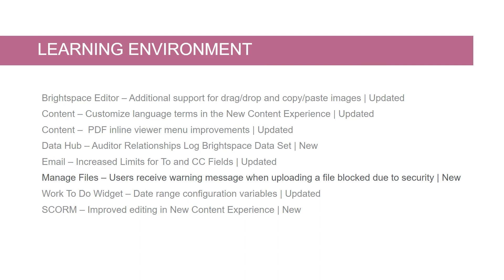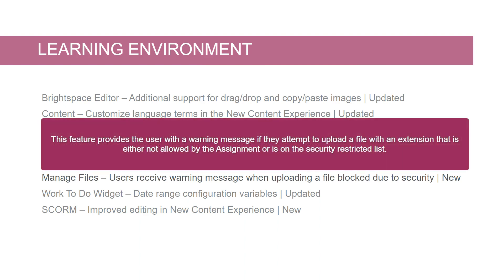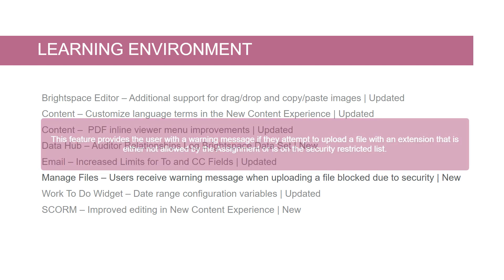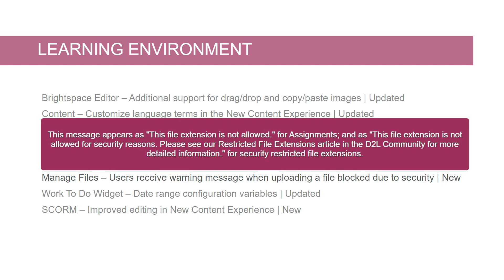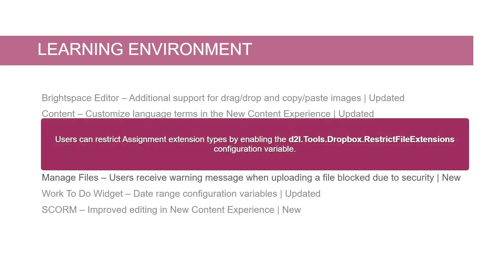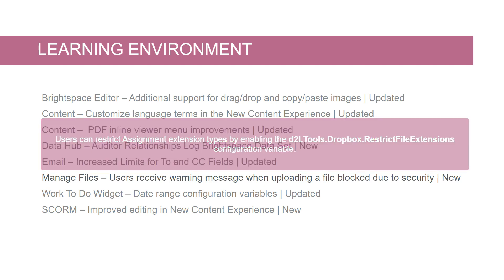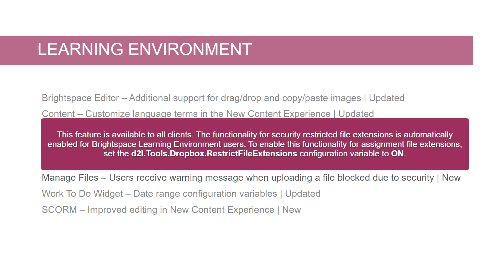Manage Files: Users receive a warning message when uploading a file blocked due to security. This feature provides the user with a warning message if they attempt to upload a file with an extension that is either not allowed by the assignment or is on the security restricted list. This message appears as 'This file extension is not allowed for assignments' and 'This file extension is not allowed for security reasons.' Please see the Restricted File Extensions article in the D2L community for more information. Users can restrict assignment extension types by enabling the D2L.tools.dropbox.restrict file extensions configuration variable. This feature implements PI item D3945 and is available to all clients. To enable, set D2L.tools.dropbox.restrict file extensions configuration variable to on.